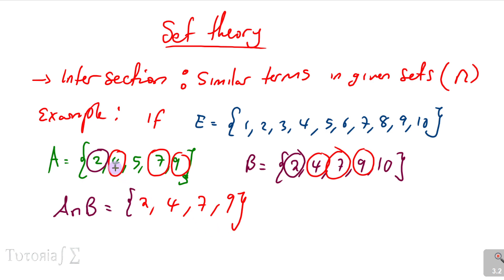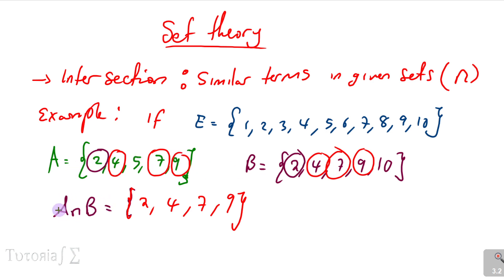Note that for sets we use curly brackets. So intersection finds the similar terms in the two sets — A intersection B means what are the common terms in A and B.